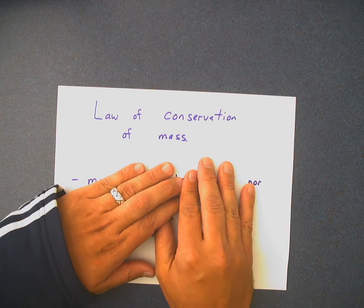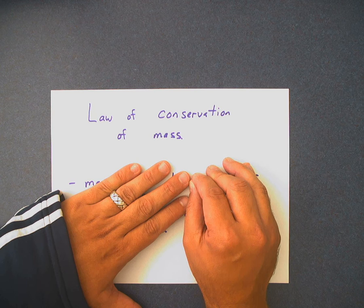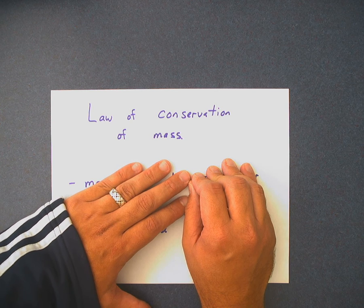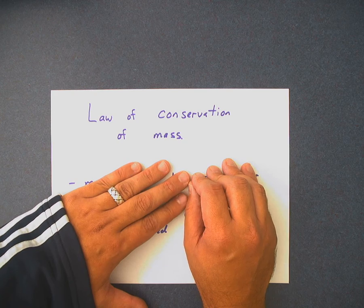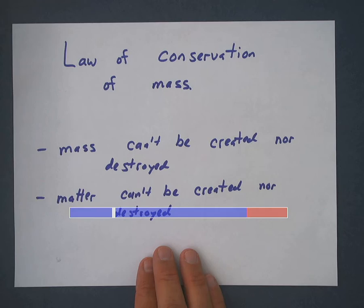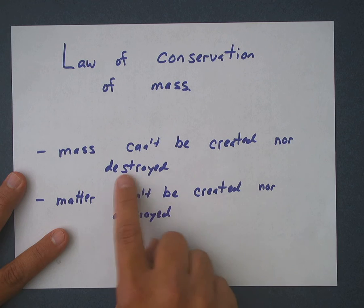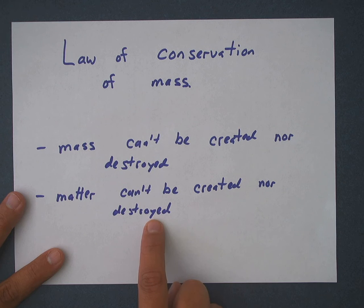So the law of conservation of mass. If you hear the word conservation, what does that mean to you? Have you heard that word before? Zoos like to pride themselves on being conservationists, where they try to not let the wetlands get destroyed — keep it the same. So the law of conservation of mass says: mass can't be created, mass can't be destroyed. Another way to say that is matter cannot be created nor destroyed.